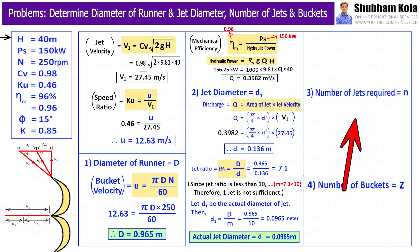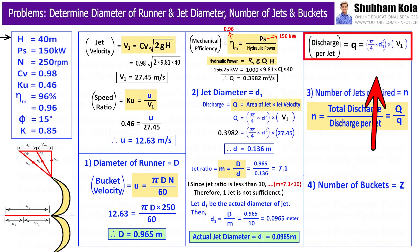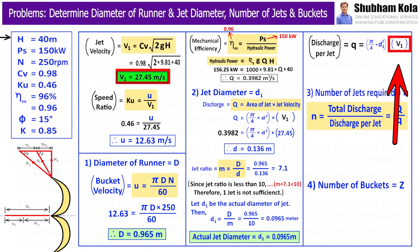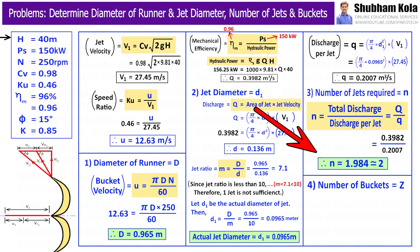Next we want to calculate number of jets required, that is n, which is the ratio of discharge rate Q and discharge per jet q, which is given by formula area × velocity of jet V1, where area is π/4 d1² and we had calculated actual diameter of jet d1 as 0.0965 meter. Therefore we will get number of jets required is 2. That means 2 jets of diameter 0.0965 meter are required.